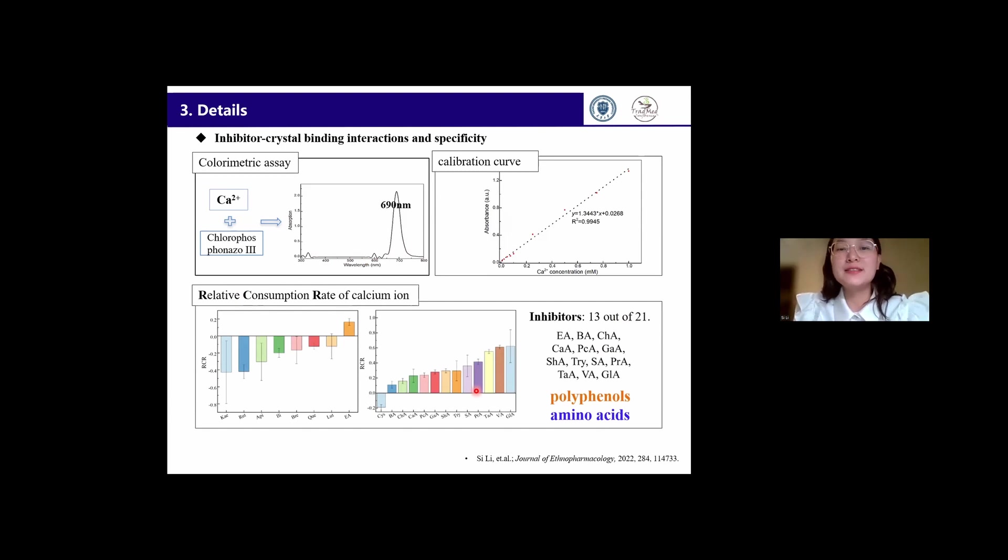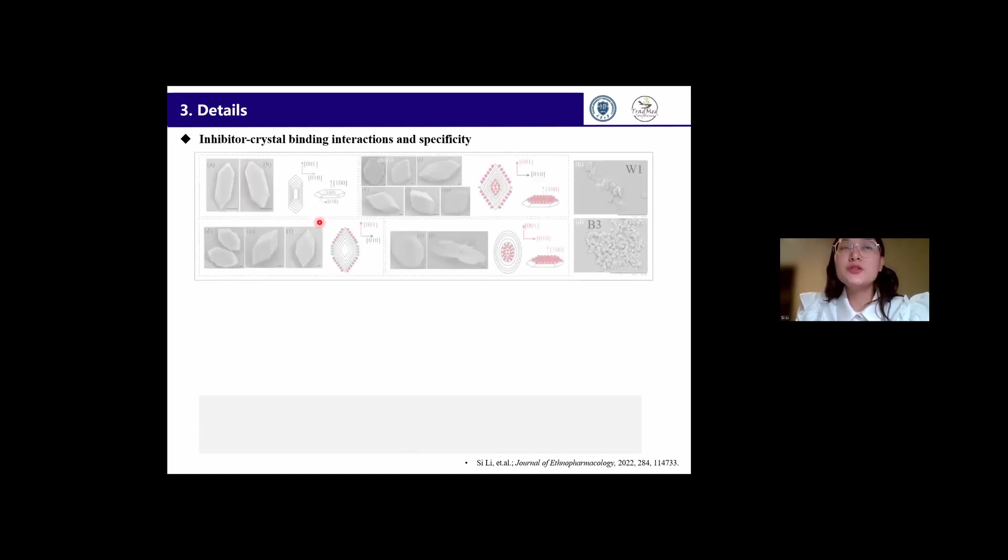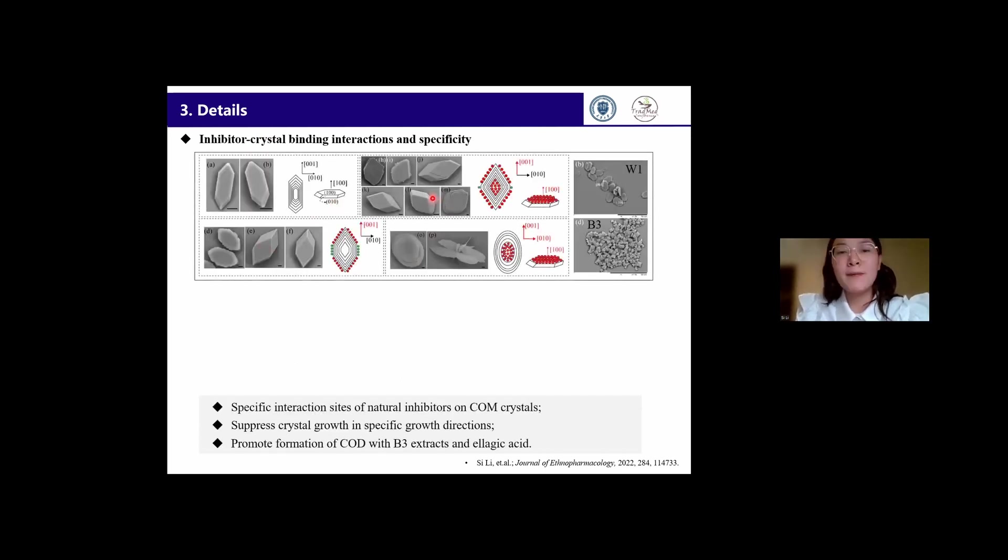Now that we have found some natural inhibitors from Chinese herbs, we began to explore their action mechanism on crystallization inhibition and stone formation inhibition. Firstly, we explored the specific interaction between the inhibitor and calcium oxalate crystals. The crystal shapes from different inhibitors indicate the inhibitor suppressed or altered the crystal growth in specific directions by binding to the crystal surface. Moreover, COD was generated in the presence of high concentration of butanol-soluble extracts.